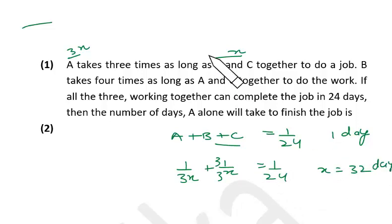32 days. This means B and C together will do the work in 32 days. How long will A take? 3x means 3 into 32, which means 96 days. So A alone will take 32 into 3 which is 96 days. Okay, so simple it was. I hope you understand.